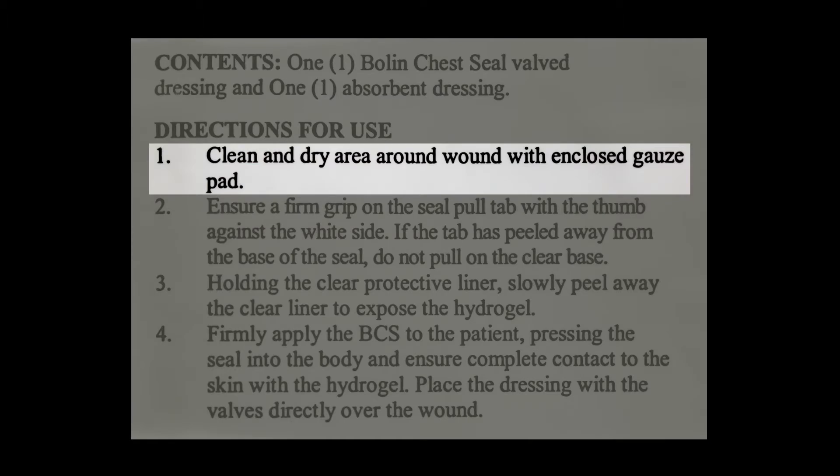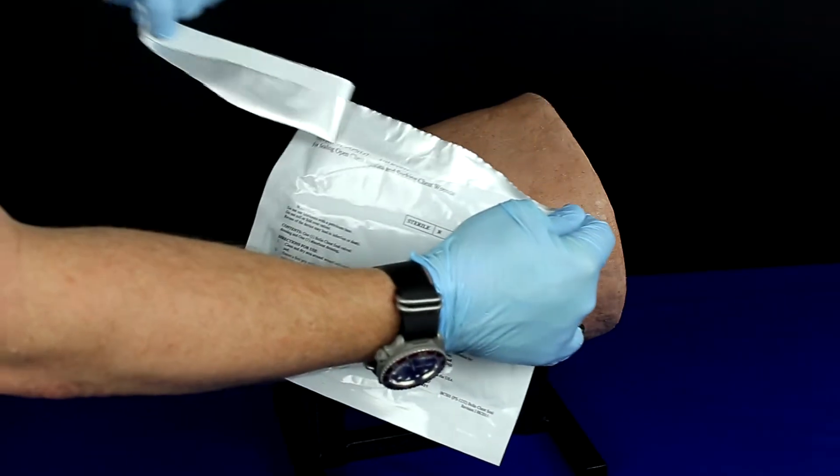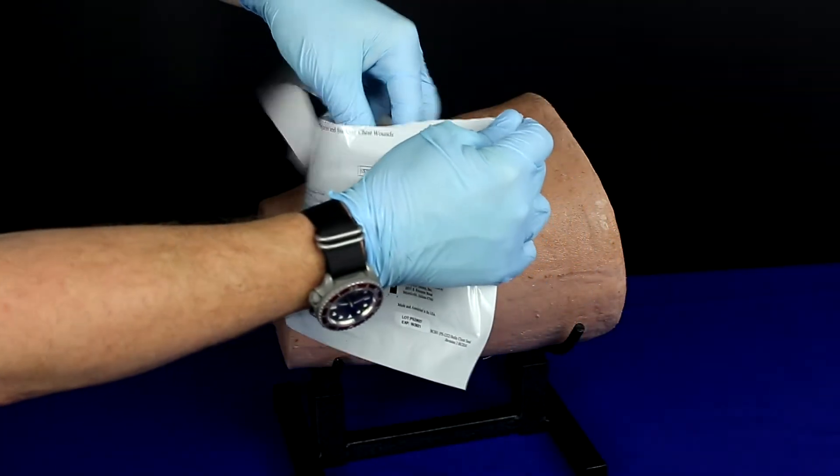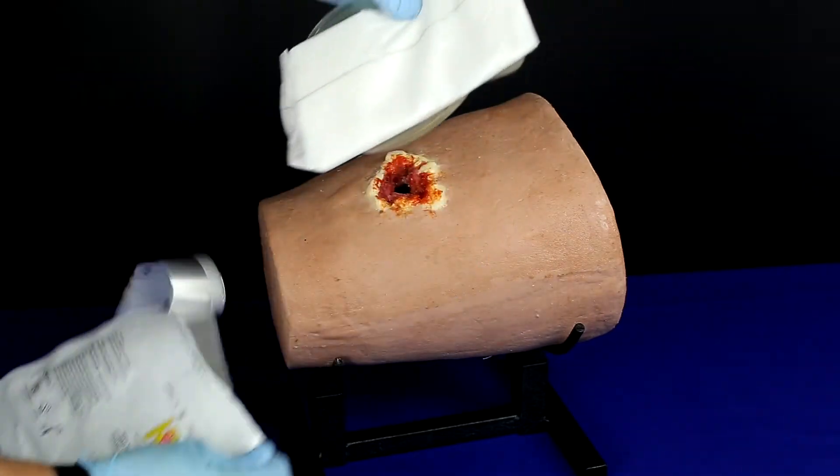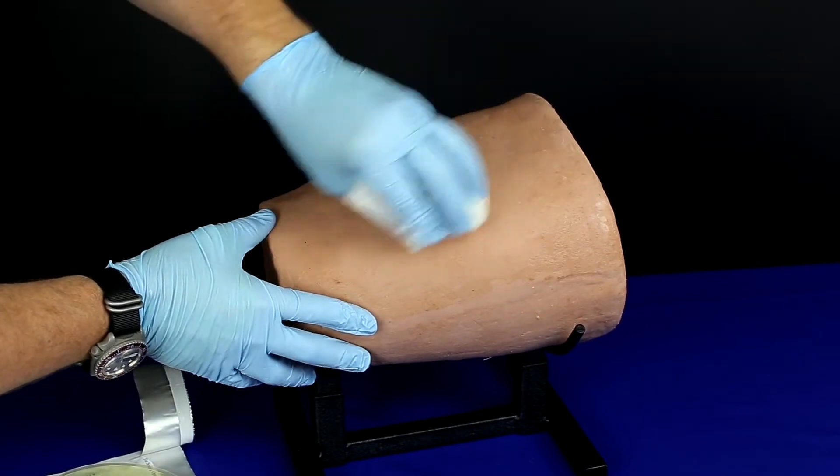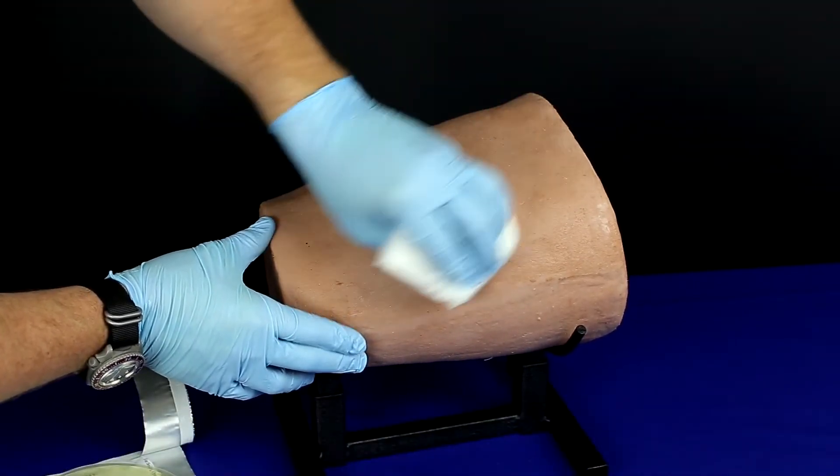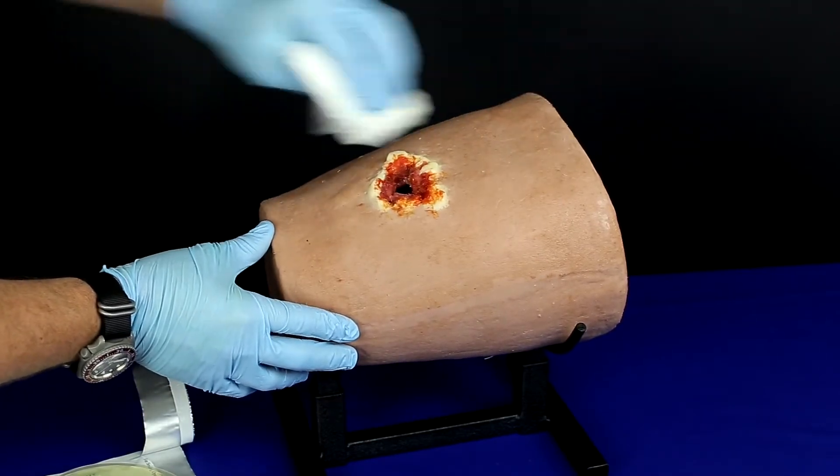Clean and dry the area around the wound with the enclosed gauze pad. Utilizing the tear notches at the top of the packaging, open the package and remove the enclosed gauze. Clean around the wound area, removing any fluids and external debris. Clean in a circular motion moving away from the wound site, keeping in mind that the Bolin chest seal is 6 inches in diameter.